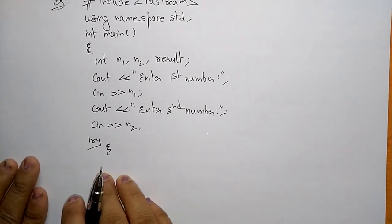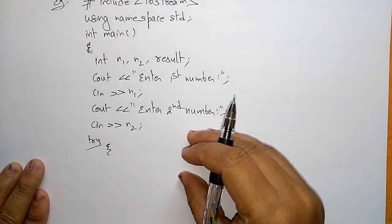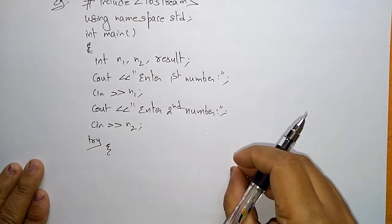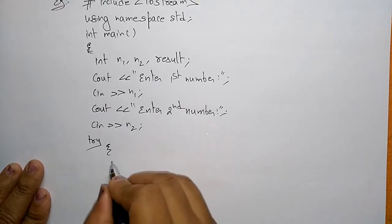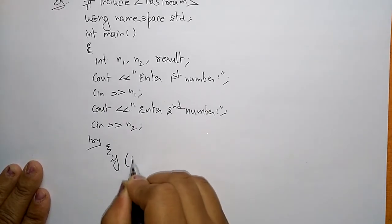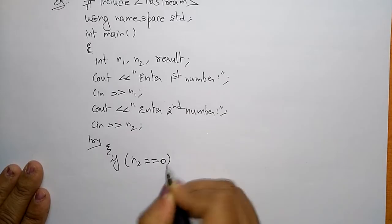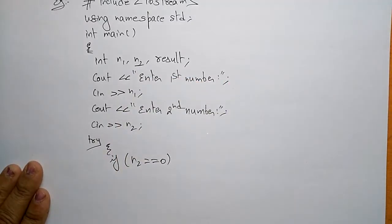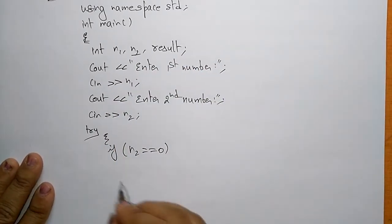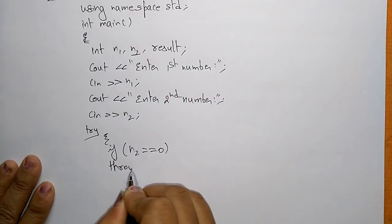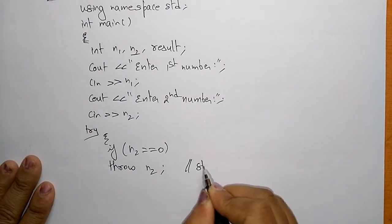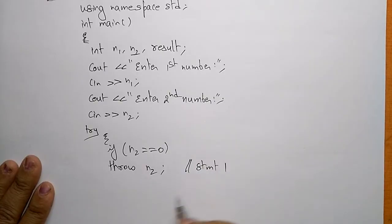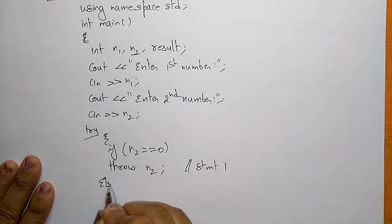Without crashing the program, we use the keywords try, catch, and throw to handle the exception and execute the program in normal sequence. Inside the try block: if n2 is zero, it throws n2 — it throws statement one. Else, if n2 is not zero, it proceeds normally.